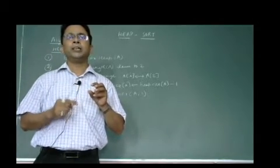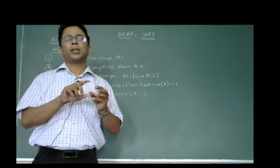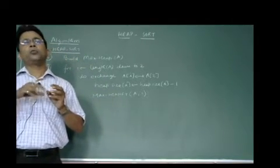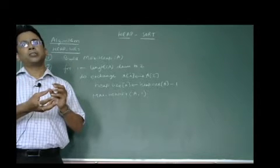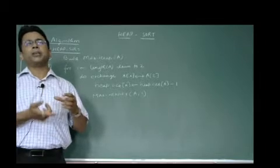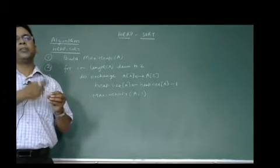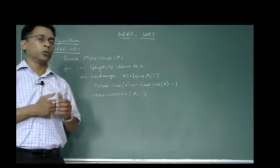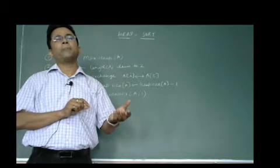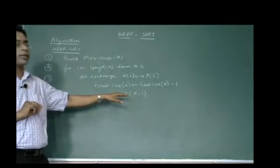If the heap property is not satisfied, the root node value is compared with the left child and right child. Whichever among these three is the largest is placed at the root, and the root node is swapped with that largest value. Then the root shifts to the position of the previous largest node, and we run heapify again at that position iteratively, wherever the swapping has taken place.